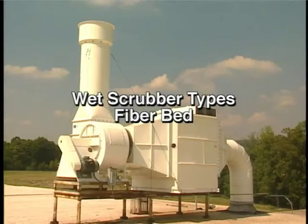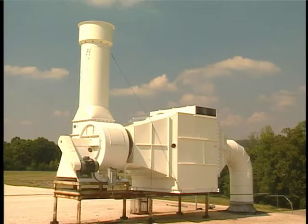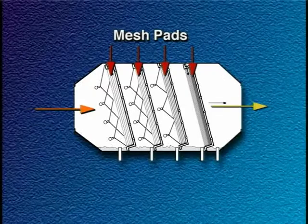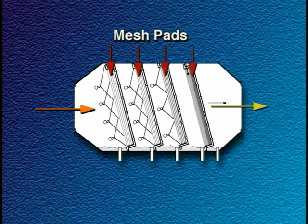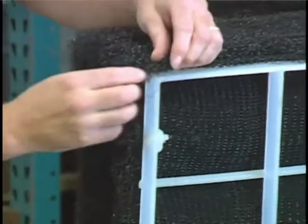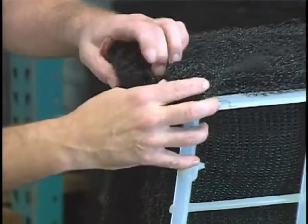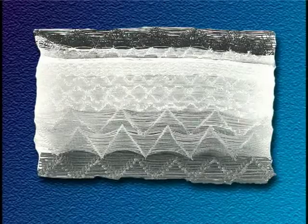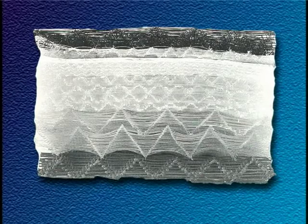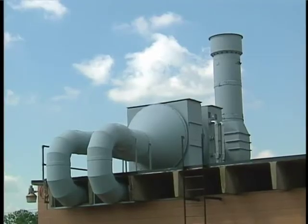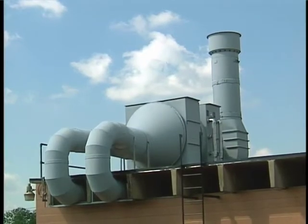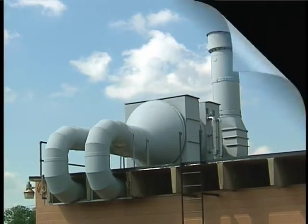A medium energy device used for the collection of liquid particles is the fiber bed scrubber. In this collector, the contaminated gas stream flows horizontally through one or more vertical mesh pads composed of randomly interlaced fibers or woven fibers. The density of the fibers controls the size of droplets that are removed. Scrubbing liquid is sprayed continuously or intermittently on the inlet side of each pad.